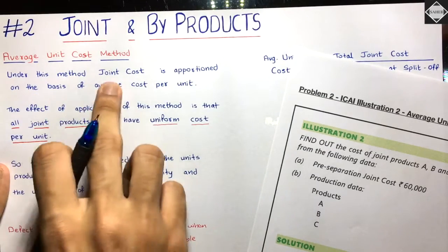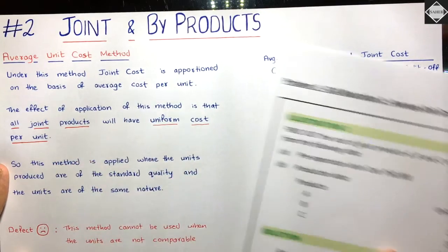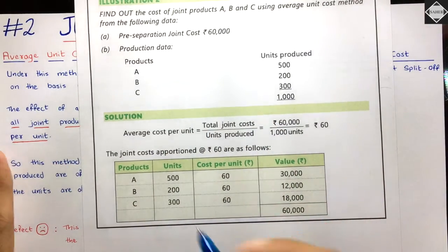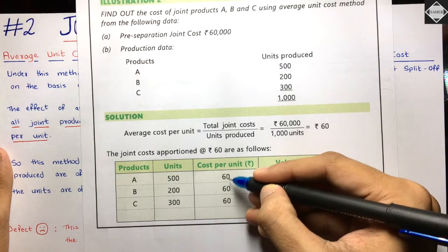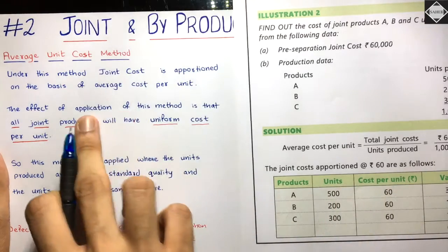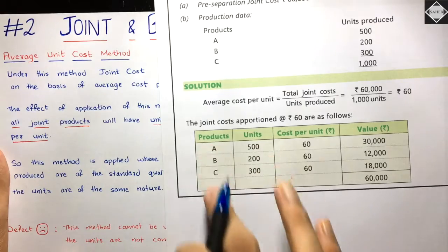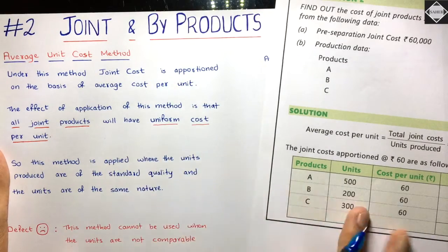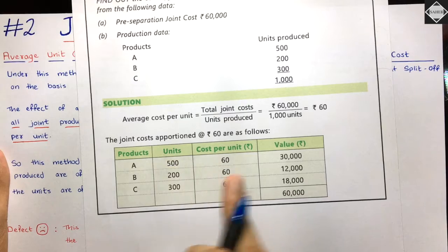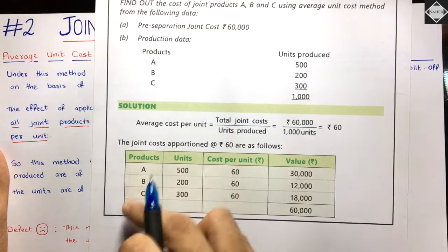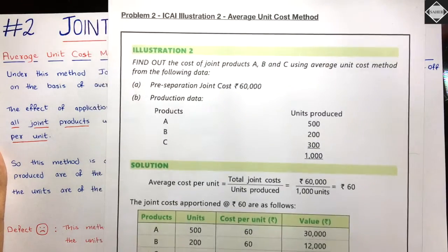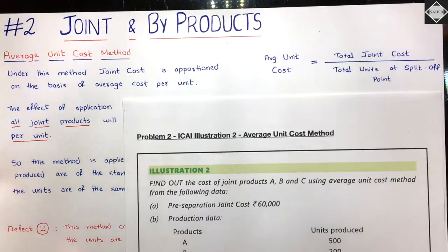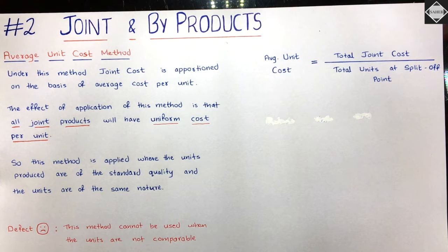To present this properly: the basis of apportionment is average cost per unit. You can see that the cost per unit is 60, 60, 60 — uniform across all products. Multiply and you get the value apportioned to each product; in total it adds up to 60,000. That's it for this video — a really simple and straightforward method. See you in the next video!